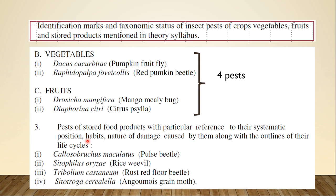We also have pests of stored food products: Callosobruchus maculatus, Sitophilus oryzae, Tribolium castaneum, and Sitotroga cerealella — 4 pests for stored crops, making 17 in total. For all of these, we need to know the identification marks, taxonomic status, habits, and nature of damage. I am going to make videos for each and every pest, and the links will be added to the description box so you can watch them and get an idea about each pest.